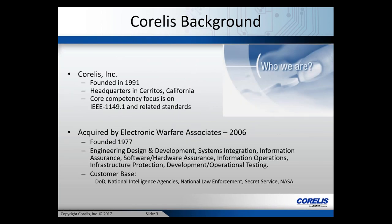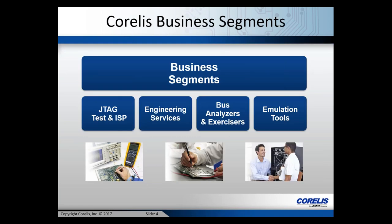A little background on Corellis: we were founded in 1991, headquartered in Cerritos, California. We focus on board and system-level test products and services mostly related to the IEEE 1149.1 standard. Our parent company, Electronic Warfare Associates (EWA), was founded in 1977 and acquired Corellis in 2006. Our four main business segments include JTAG test and in-system programming, engineering services, serial bus analyzer products for I2C and SPI buses, and Blackhawk JTAG emulation products for Texas Instruments microprocessors.